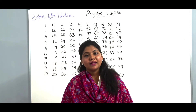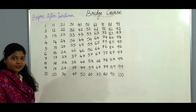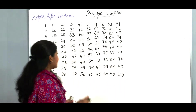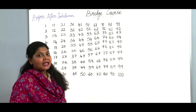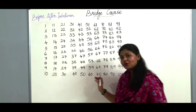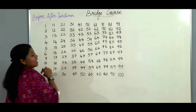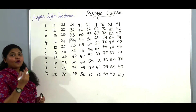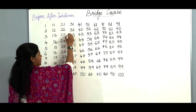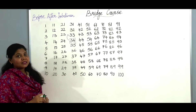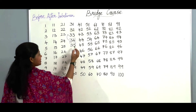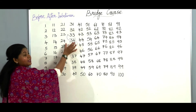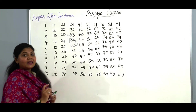Now let us learn the next topic: before, after, and in-between numbers. Let us choose a number between 1 and 100 — I will choose 34. The number that comes before 34 is called the before number, and the number that comes after 34, which is 35, is called the after number. And 34 will be called the in-between number.